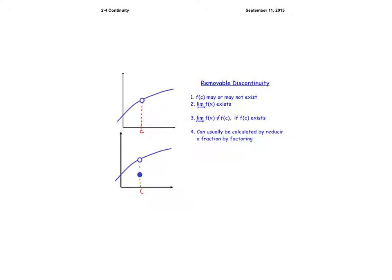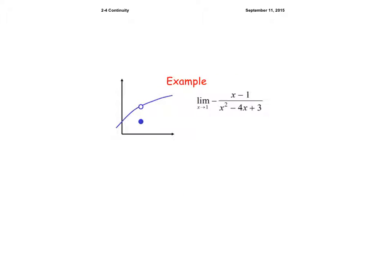Let's talk about discontinuity. Removable discontinuity is when the point is missing or misplaced, which violates the rule that the limit must equal the function at that point. Here's an example: since this limit can be reduced — you can factor out — and the bottom will have an x minus one which cancels with the top.